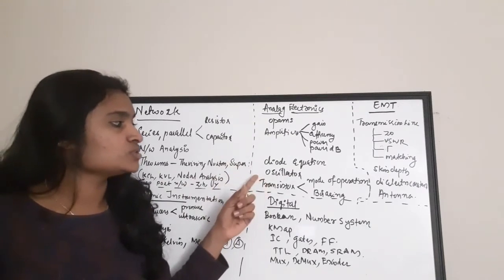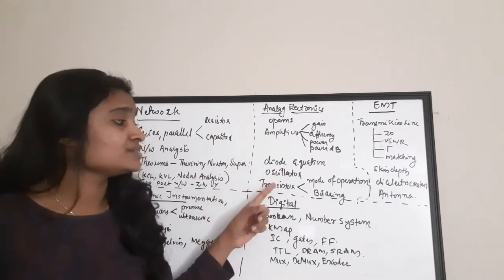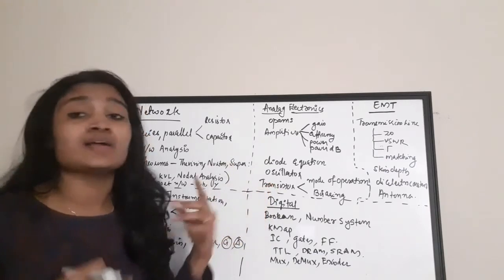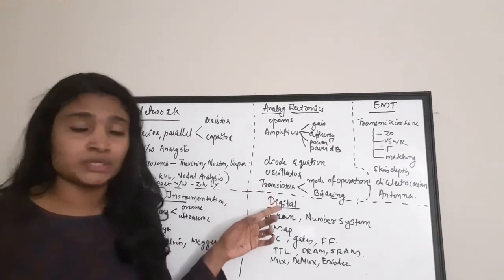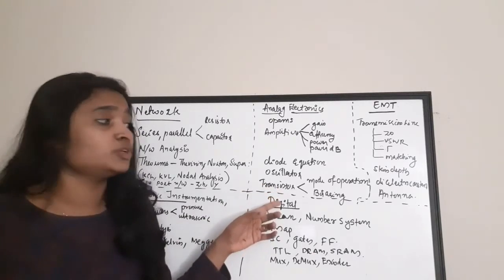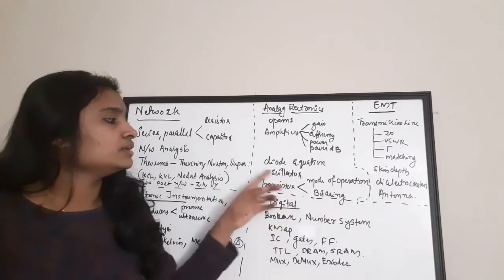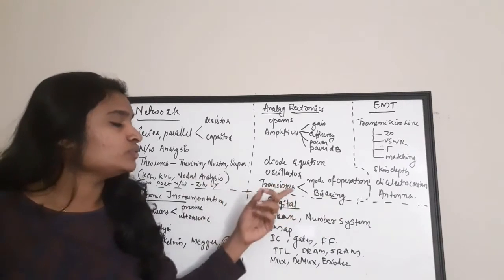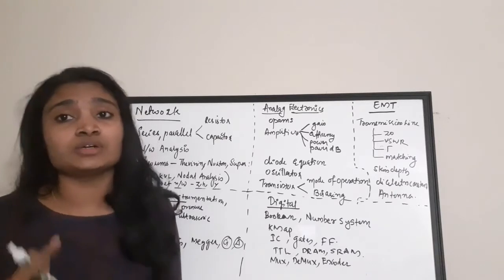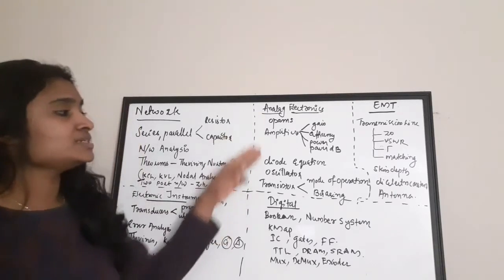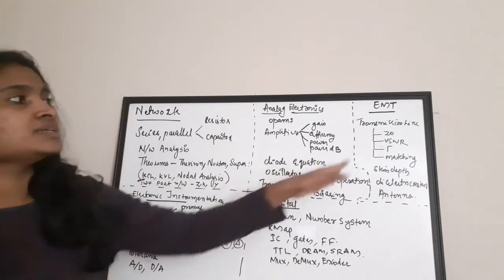Other important topics in Analog Electronics include the diode equation, oscillators, and transistors. For transistors, you need to identify the mode of operation from a given circuit, study biasing, and know the current gains for various configurations — Common Emitter, Common Base, and Common Collector.